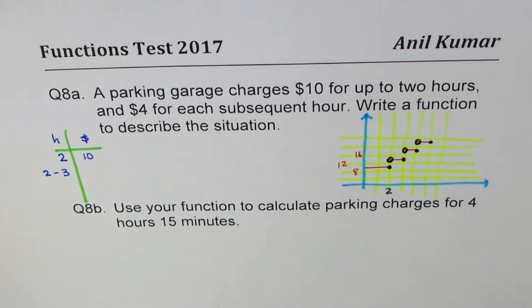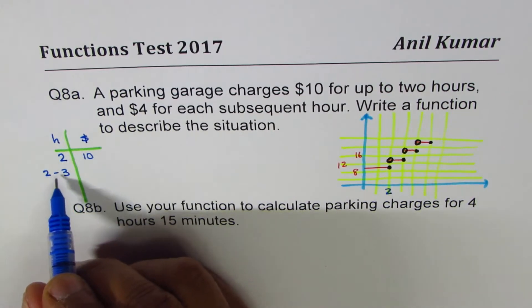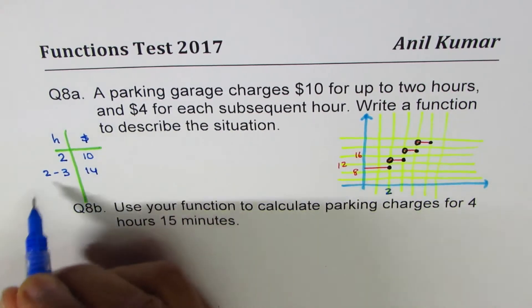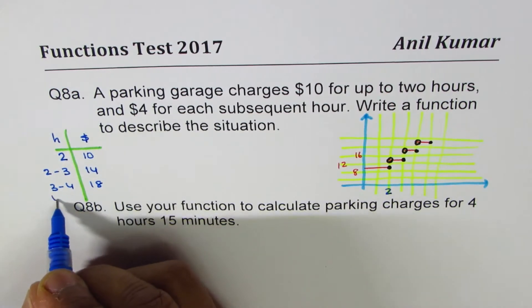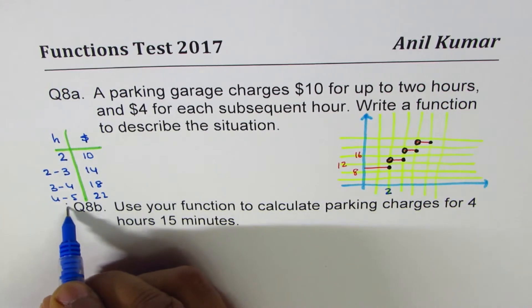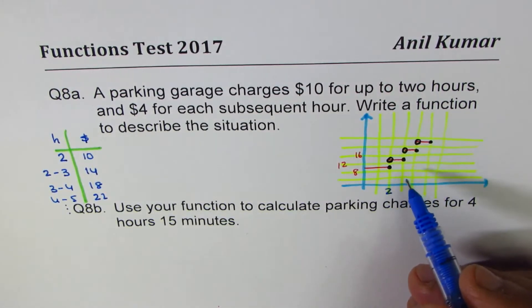So a person would like to pay minimum. So up to two hours, two included. From two to three, four more, so it becomes 10 plus 4 is 14. Three to four, it will be 18. Four to five, it is 22, and so on. So that is the step function which you have.